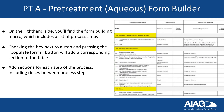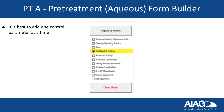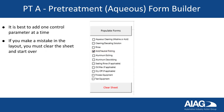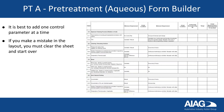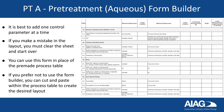Add sections for each step of the process, including rinses between process steps. Note that the rinse section is identical for all rinses used. It is best to add one control parameter at a time. If you make a mistake in the layout, you must clear the sheet and start over. Once completed, you can use this form in place of the pre-made process table. If you prefer not to use the form builder, you can cut and paste within the process table to create the desired layout.